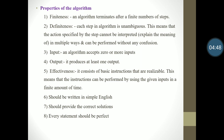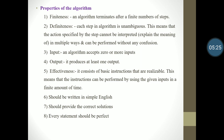Fifth is effectiveness — the algorithm consists of basic instructions that are realizable, meaning the instructions can be performed using the given input in a finite amount of time; it should consider minimum time. Sixth, an algorithm should be written in simple language so we can understand it easily. Seventh, it should provide the correct solution — that is essential; the algorithm should provide correct solutions only. And the last property is that every statement should be perfect.